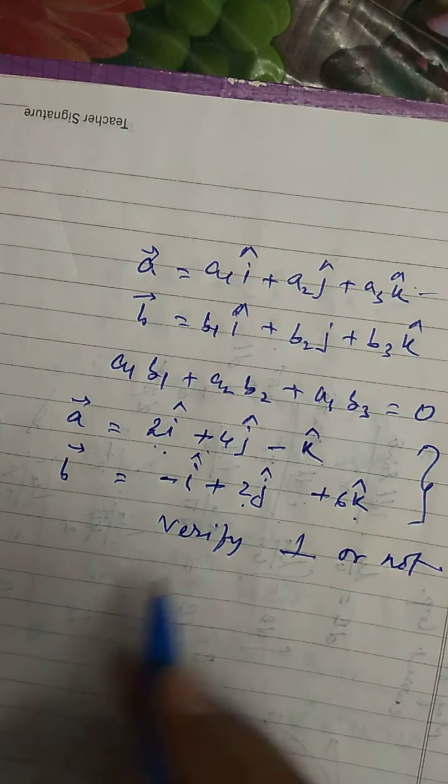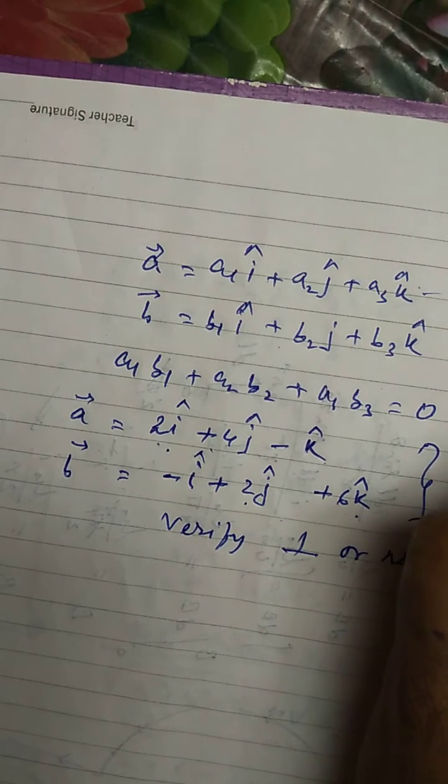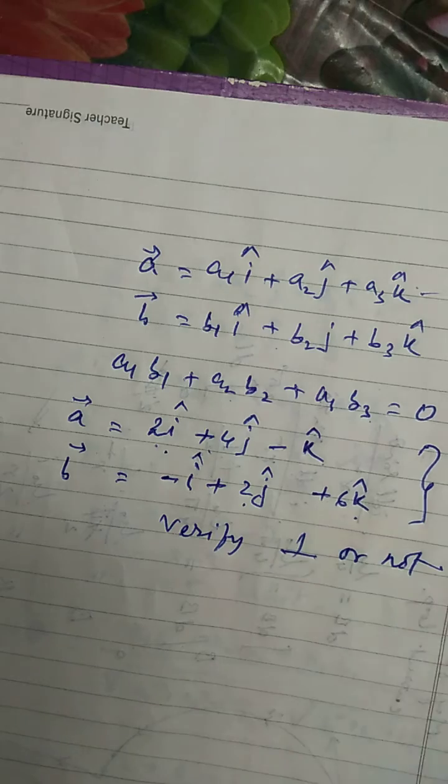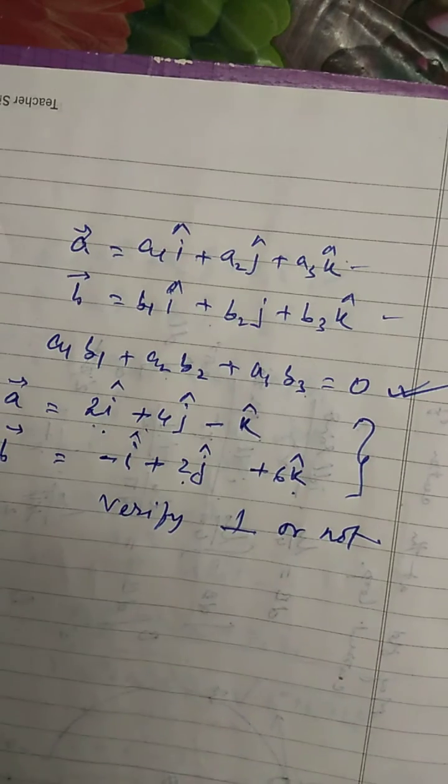Just see the condition. If a1b1 plus a2b2 plus a3b3 is equal to 0, then we can say that these two vectors are perpendicular. So, let us verify.